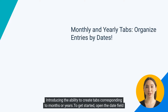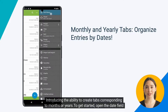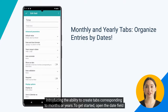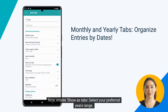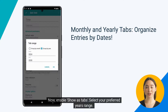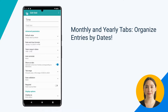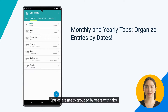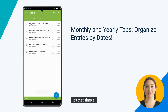Introducing the ability to create tabs corresponding to months or years. To get started, open the date field settings. Now enable "show as tabs" and select your preferred years range. Entries are neatly grouped by years with tabs — it's that simple.